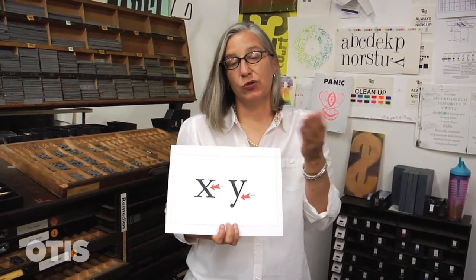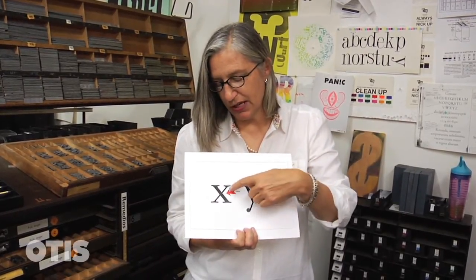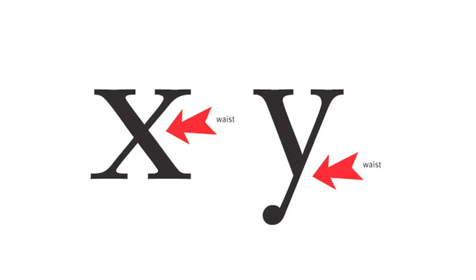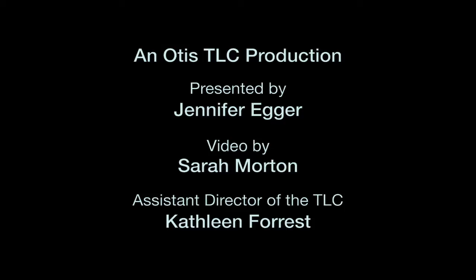Waist is where two strokes intersect. It doesn't matter whether it's above the baseline or below the baseline — where the two letter forms intersect is a waist. So those are some typographic terms. There are many more where those came from, but that should get you started on being able to discuss type in some sort of meaningful way. Thanks.